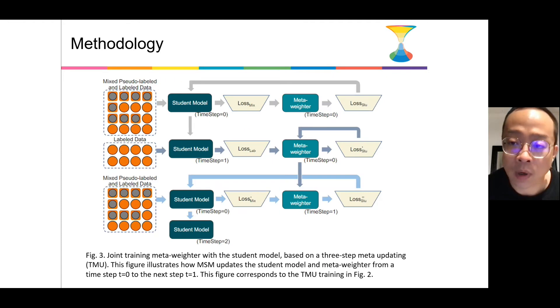In the first step of the TMU training, we input the mixed pseudo-labeled and golden-labeled data to the student model. And the loss of the student model in this time step, time step 0, is regarded as the input to our meta-weighter to generate the related weights. We use the weighted loss to update the student model from time step 0 to time step 1. And the meta-weighter is not updated in this time step. The goal of this step is to prepare a student model for time step 2, and only for that.